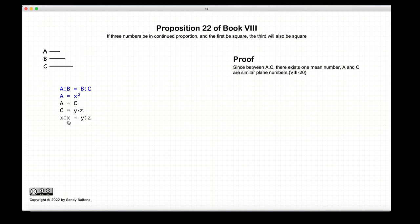This ratio is obviously equal to 1, therefore y is equal to z, and thus we have that c is equal to y squared, and thus c is a square.